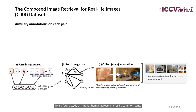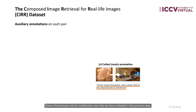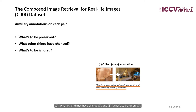To aid future study on implicit human agreements, as in common sense within visual language, we additionally collect a set of auxiliary annotations for each pair. Given the image pair and its modification text collected in the previous step, we employ human annotators to answer three key questions: what is to be preserved, what other things have changed, and what is to be ignored. Although not used in this work, these annotations shall be able to provide training signals for aspects that are implied but not explicitly stated.